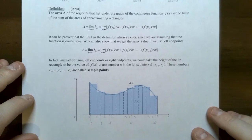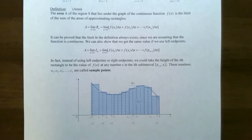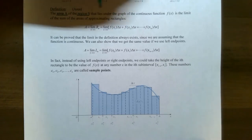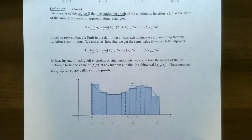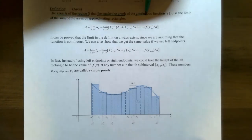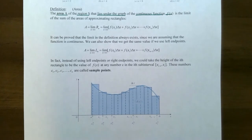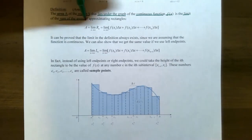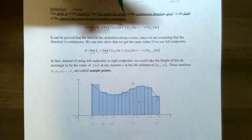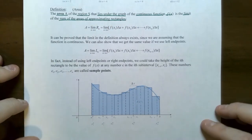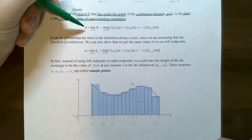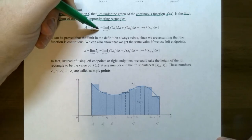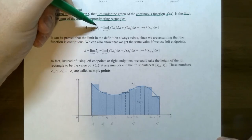We're going to pick up where we left off at the definition of what's called area of a region. The area A of a region S is the area under the curve of a continuous function f of x, and we found out from the previous video it is a limit of the sum of the approximating rectangle areas. If you want to look at the right endpoints, the area is the limit as the number of rectangles approach infinity using the right endpoints.